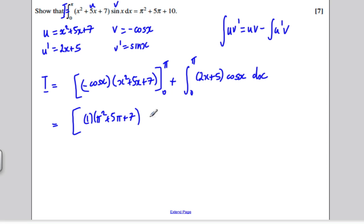If I put 0 in, cos of 0 is 1, so this would be minus 1 multiplied by 7. For now, I need to integrate between 0 and π, 2x plus 5 cos x with respect to x.